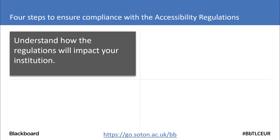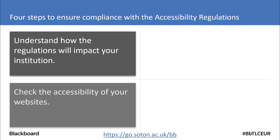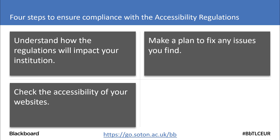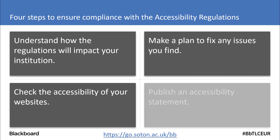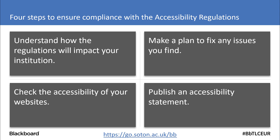In terms of how we can comply with these regulations, you can break it down to four steps. You need to understand the regulations and how they're going to impact your institution. Check the accessibility of your websites — this will include when you make changes such as updating your Blackboard theme. Then make a plan to fix any issues you find, and as you make changes ensure those changes are accessible. And of course, publish an accessibility statement.